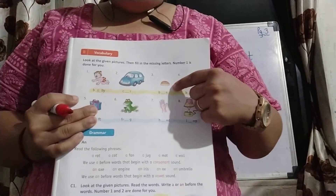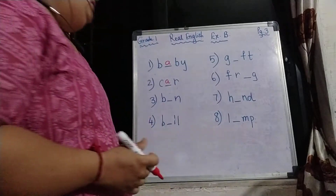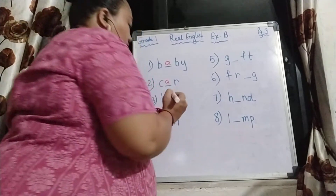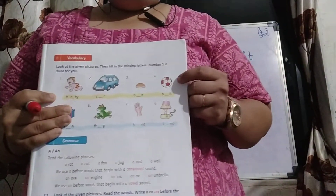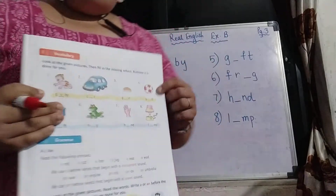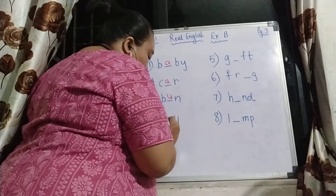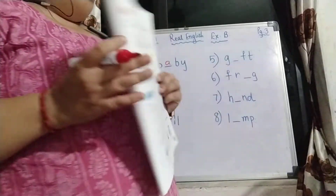Number 3 is bun. It's B-U-N, bun. What is this? This is a ball. So this is B-A-double L, ball.